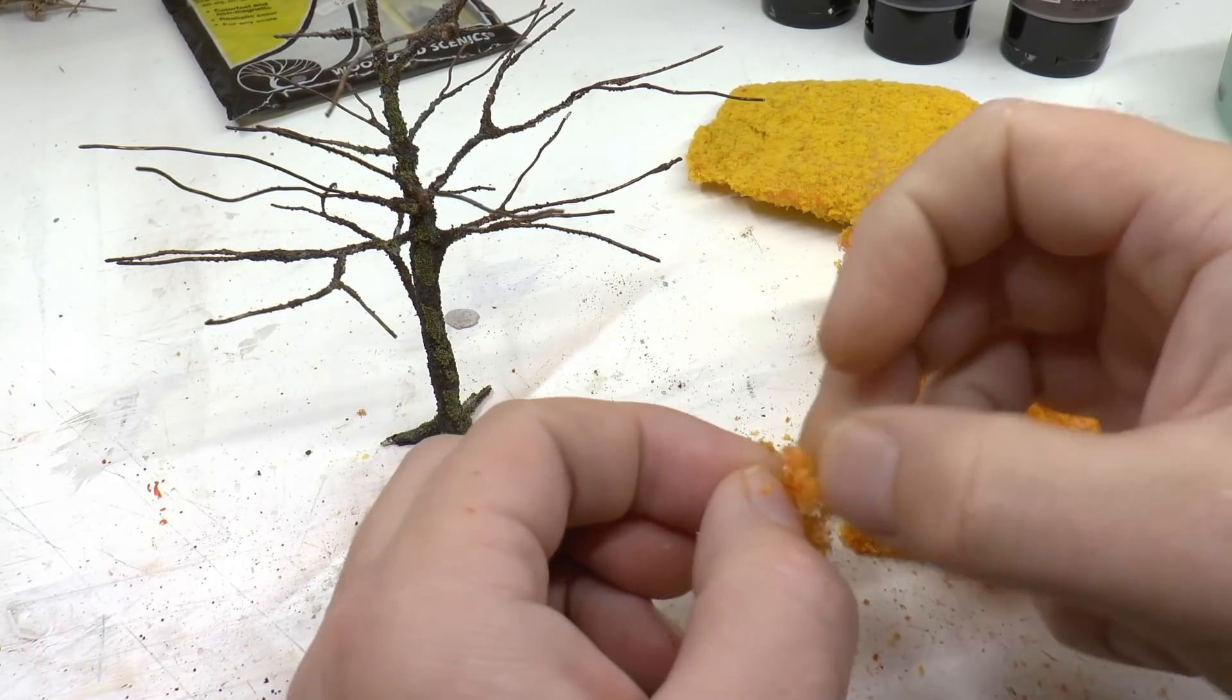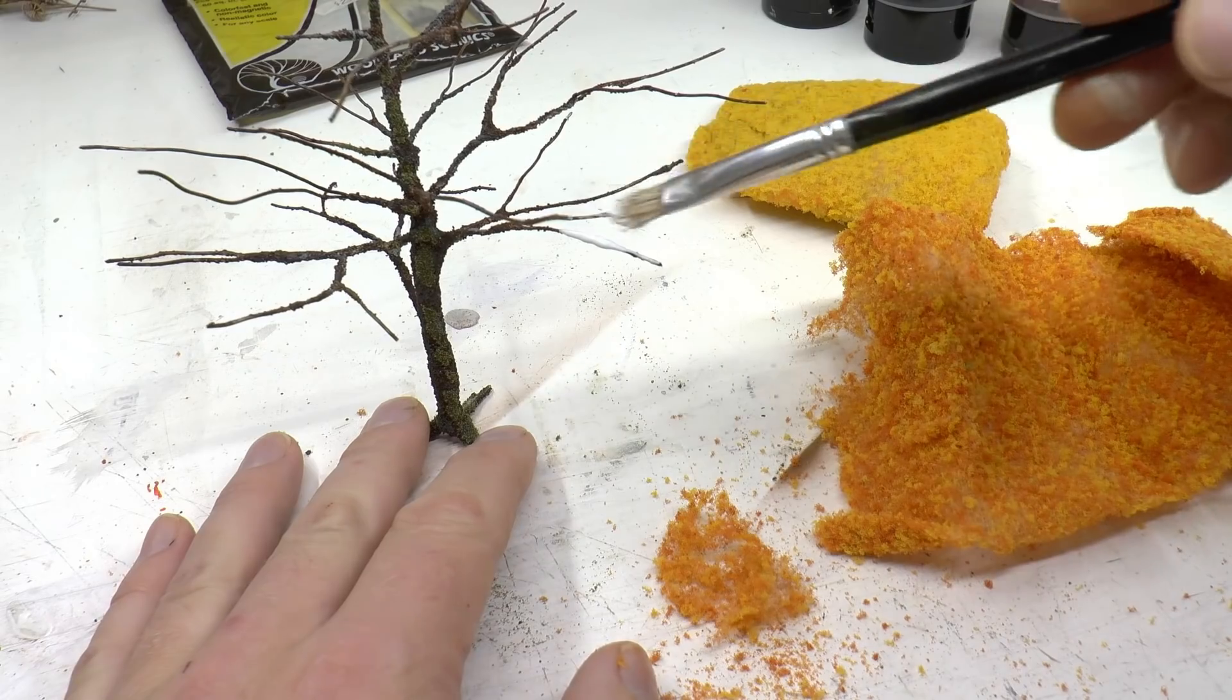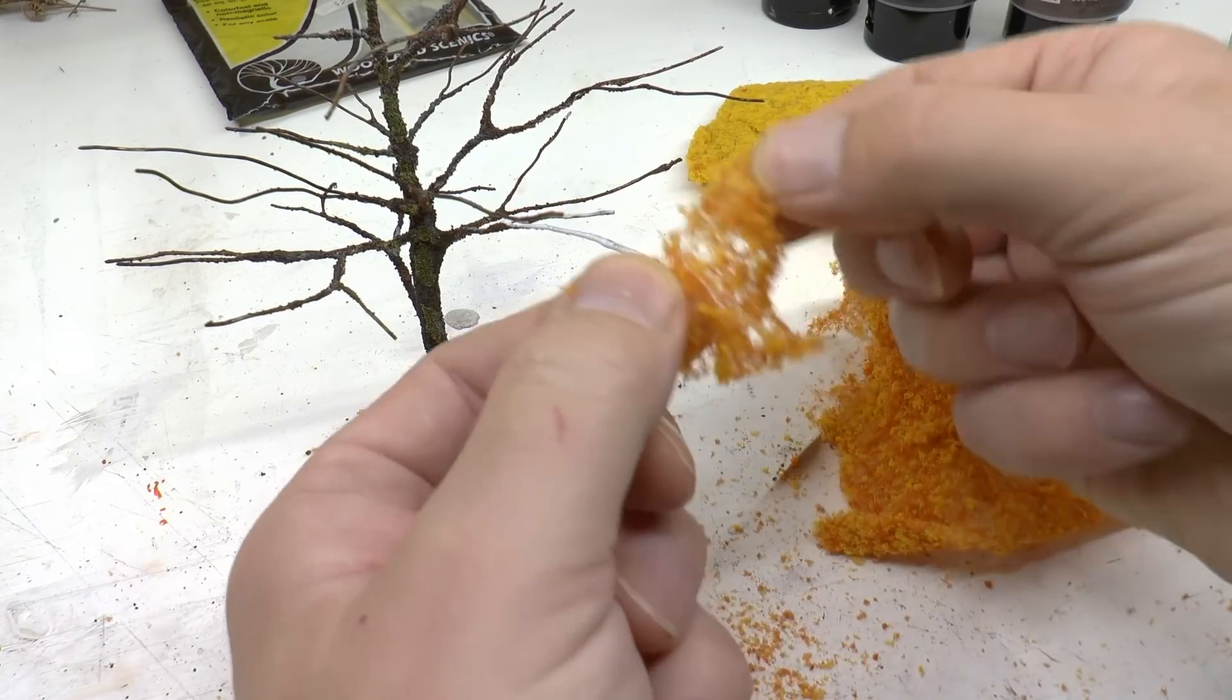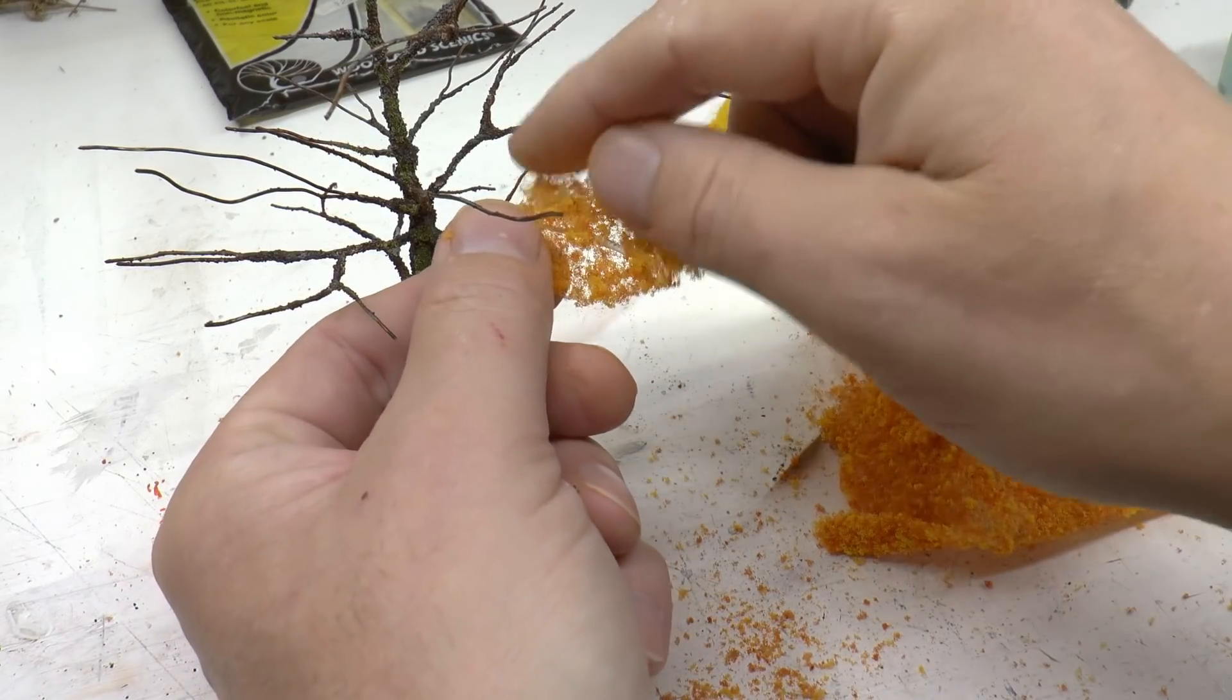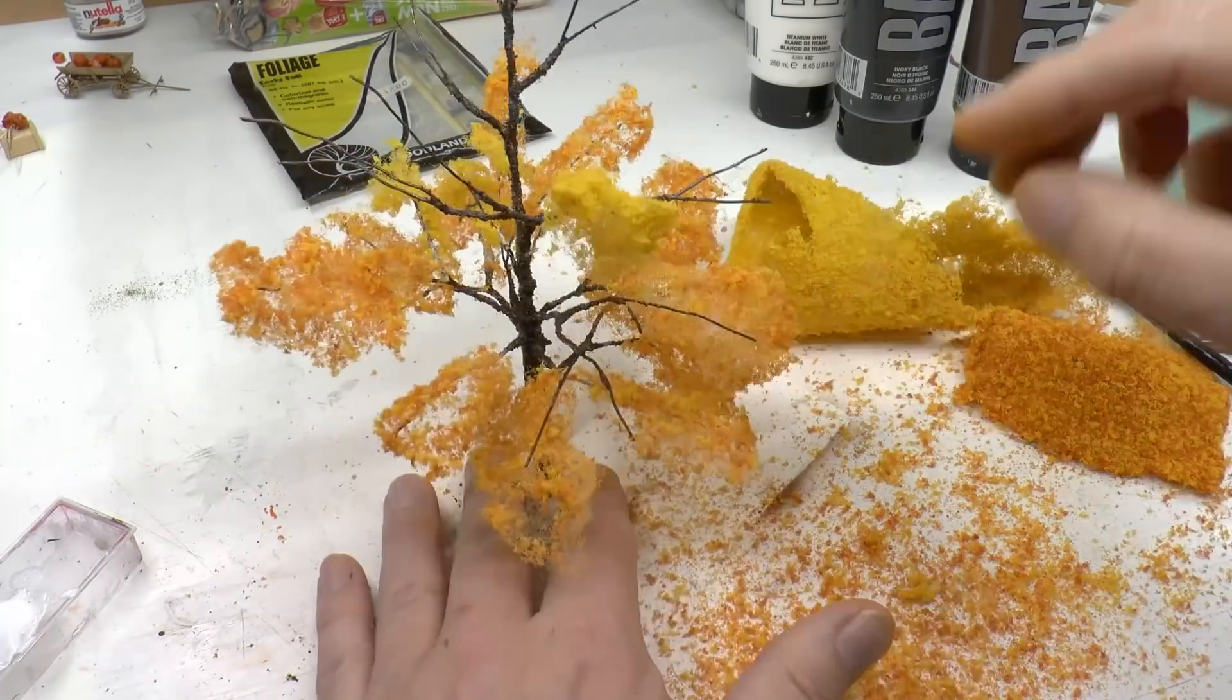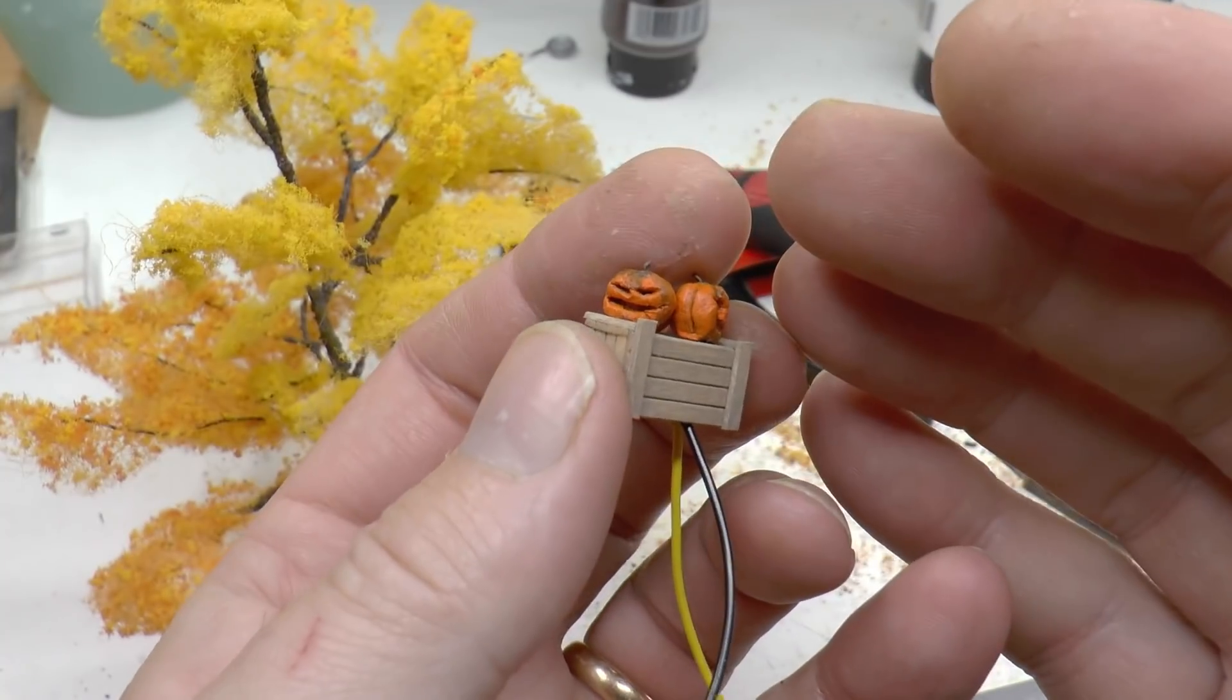Now there is another way to do this and that is to use a Woodland Scenics polyfiber and then add just leaves on top of that. But that requires extra steps and since this is just a seasonal theme I thought of doing it a bit easy for myself.